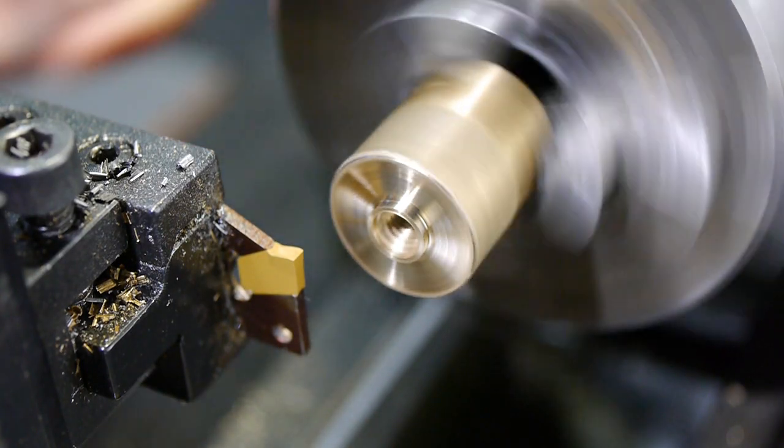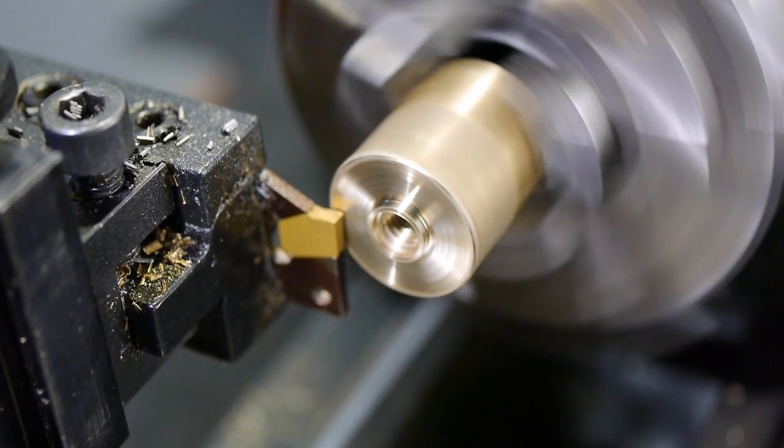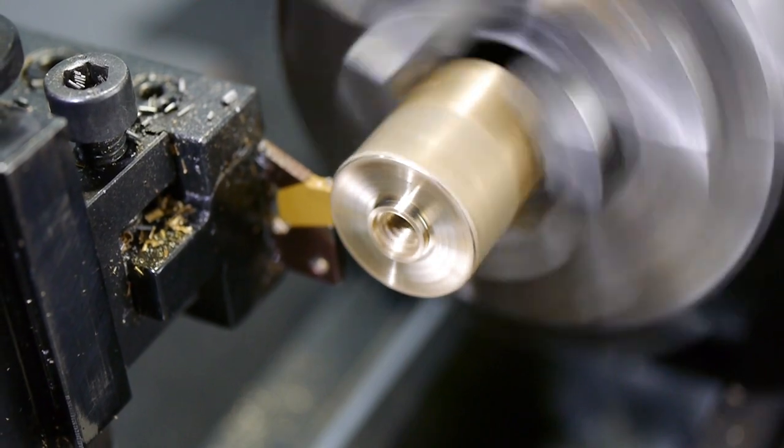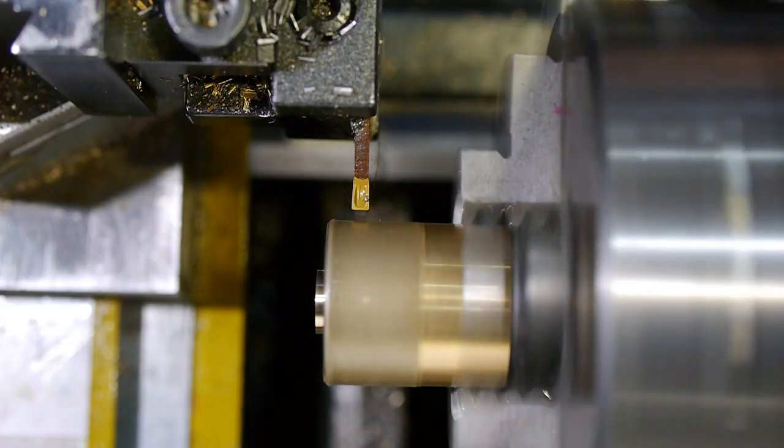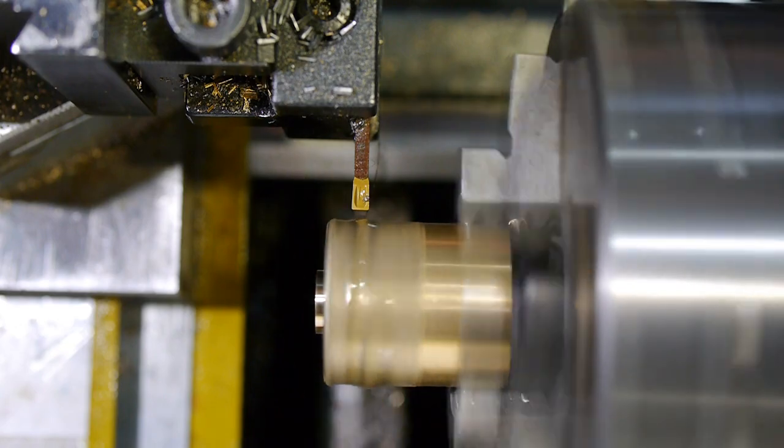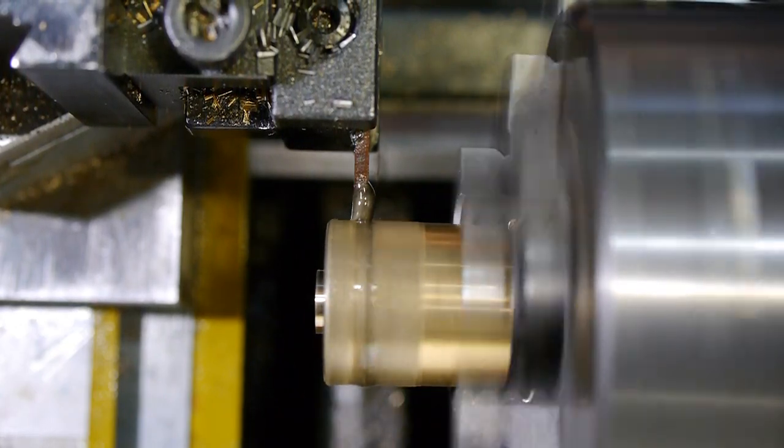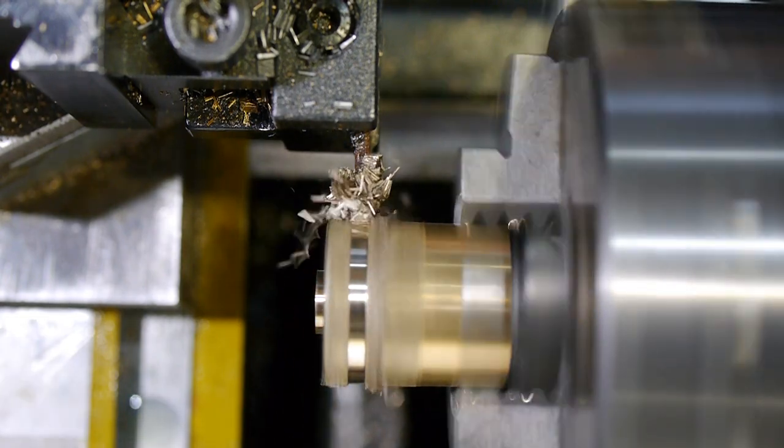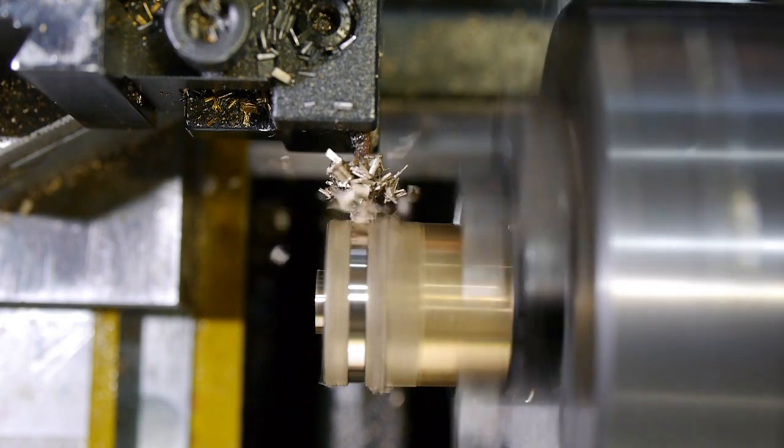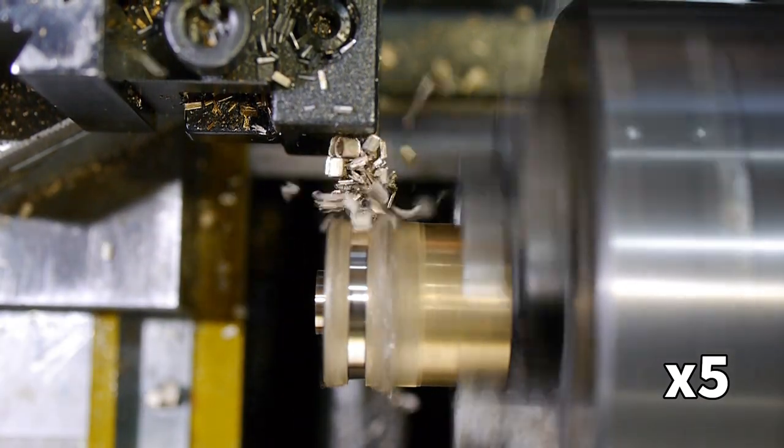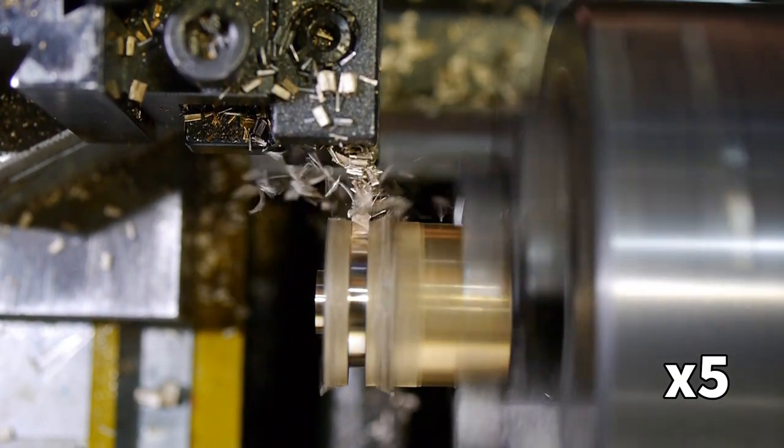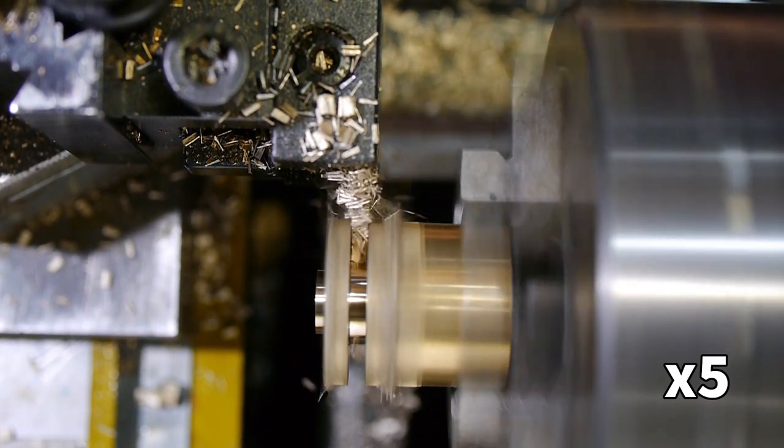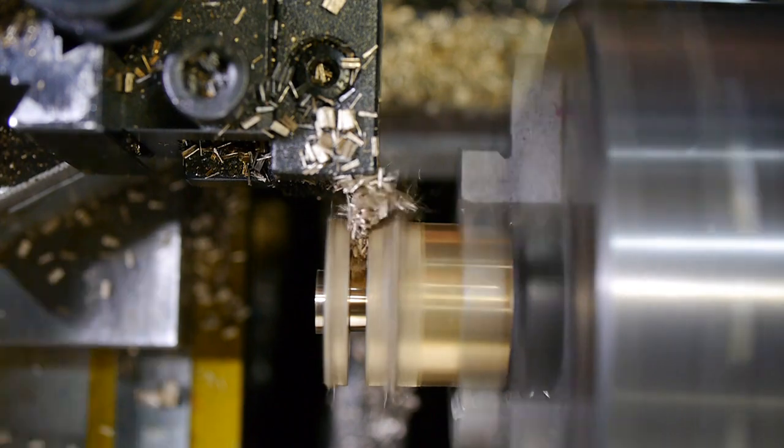It was now time to part off the two wheels from the stock. I touched the tool against the face and then used the scale on the wheel to feed in the width of the cutter and 3mm for the width of the wheel. To begin with, the tool made a lot of noise as it cut through the knurls, but thankfully sounded a lot better when it reached solid material. The brass was also easy to part off, especially with a threaded hole at the centre.